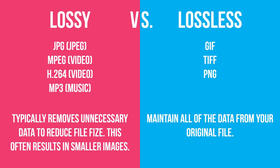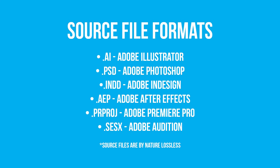Lossless file formats maintain all the data from the original file. GIF is lossless — you can save a GIF over and over and it will never lose more quality — though it's limited to a maximum of 256 colors. TIFF is a lossless format very often used for very high quality photos. PNG is sort of the replacement for GIF and is extremely popular for web-based formats.